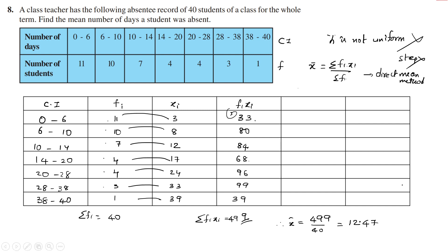So this is the assumed mean method. You cannot use step deviation because h is not uniform. Clear? Thank you.